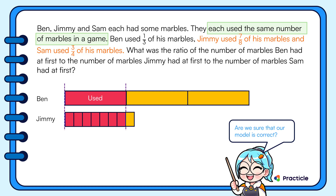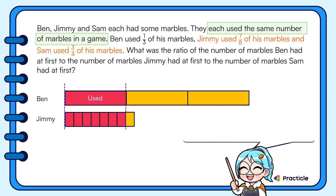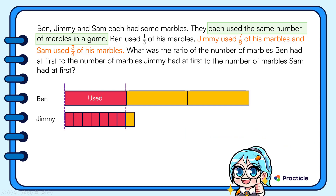Are we sure that our model is correct so far? Does seven-eighths of Jimmy's marbles represent the same number of marbles as one-third of Ben's marbles? Yes, it does! So we're on the right track.